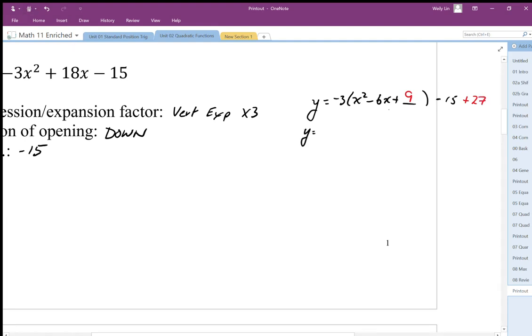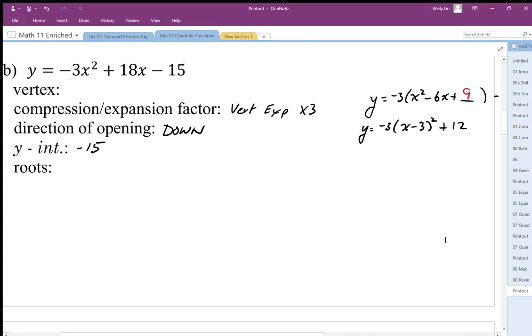When we've got the completed square, we can write it in that graphing form. So we end up with an x-coordinate of the vertex at 3 and the y-coordinate at 12. The vertex coordinate ends up being at (3, 12).